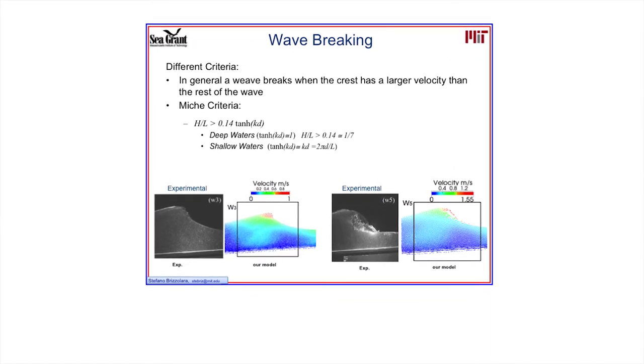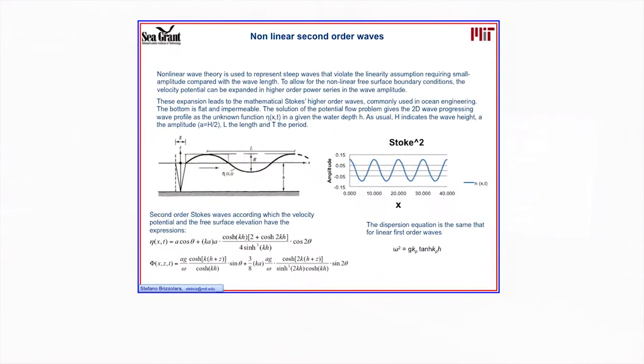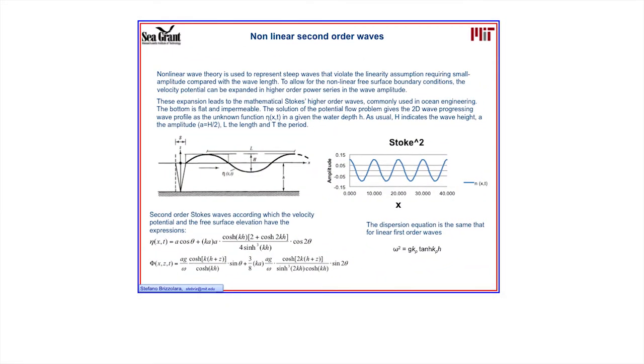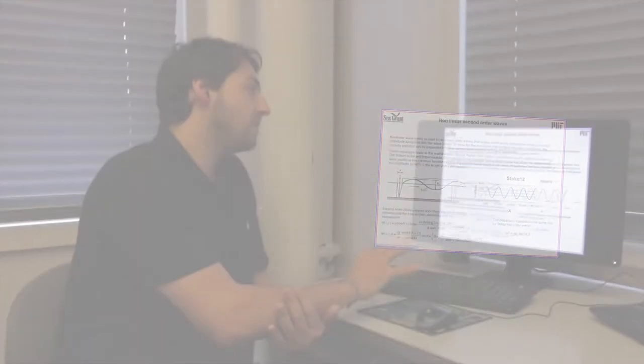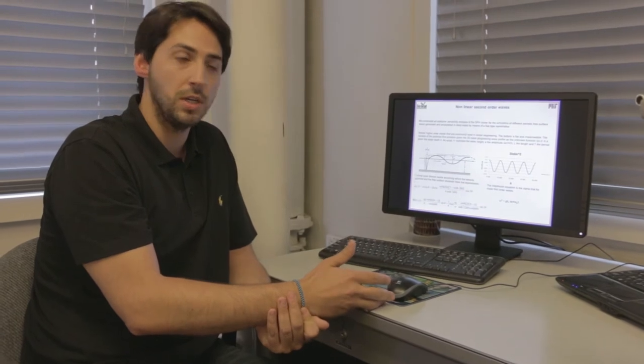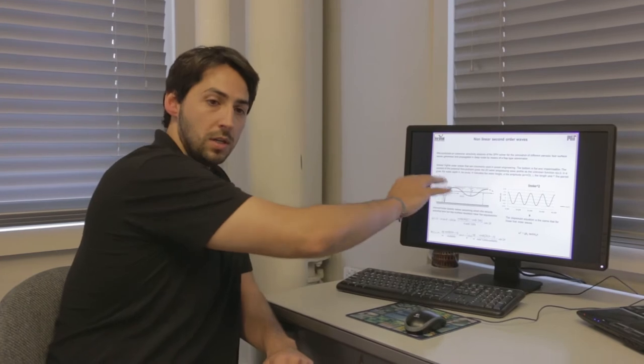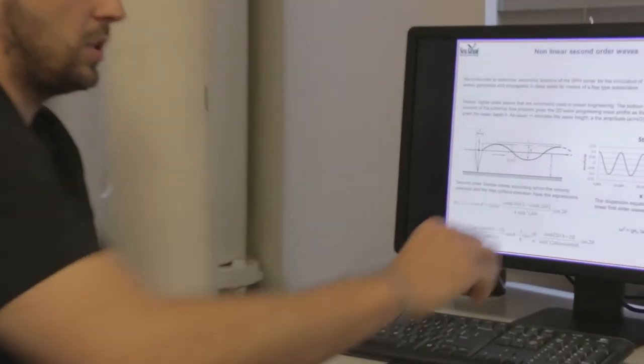To validate this kind of model, we divide the validation into two steps. In the first step, we compare the simulated free surface of the periodical wave with the theoretical one. In the second step, we validate the SPH model in the breaking region with high quality experimental data. For the first step, we decided to use the second and third order Stokes waves that are commonly used in ocean engineering and compare the simulated surface with the theoretical one.